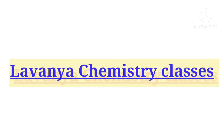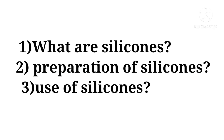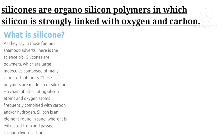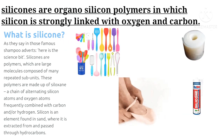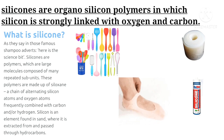Hi everyone, welcome back to the Lavender Chemistry Classes. In this session we are going to discuss what are silicones and how they are prepared, and what are the uses of silicones. Silicones are organo silicon polymers in which silicon is strongly linked with oxygen and carbon.